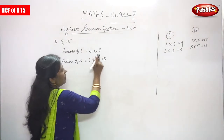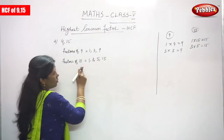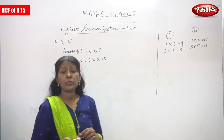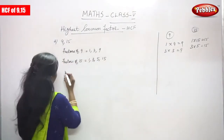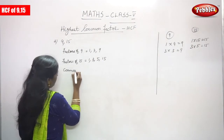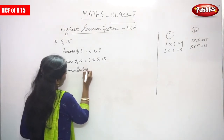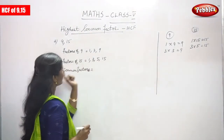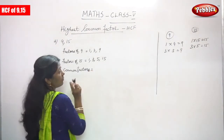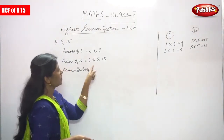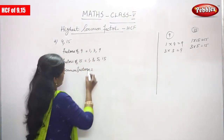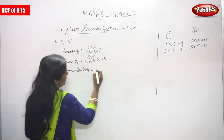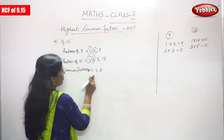Factors of 9 are 1, 3, 9. Factors of 15 are 1, 3, 5, and 15. After that, you have to find out the common factors. Common factors of 9 and 15 — the factor should be present in both numbers; it is a common factor. So circle 1 and circle 3. The common factors are 1 and 3.